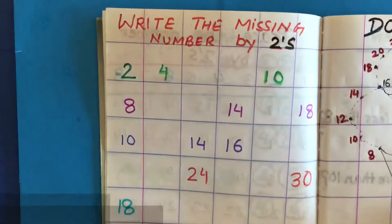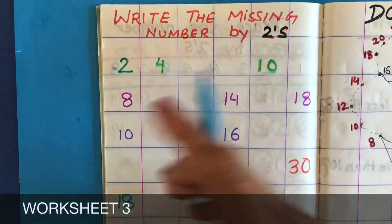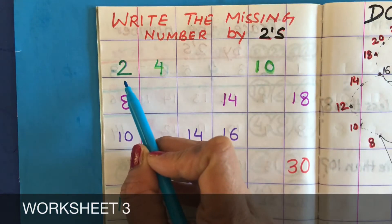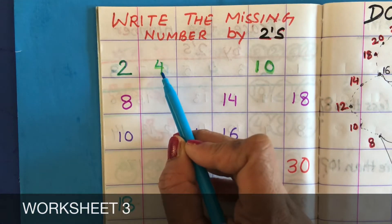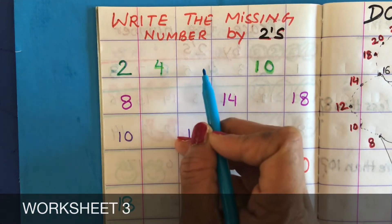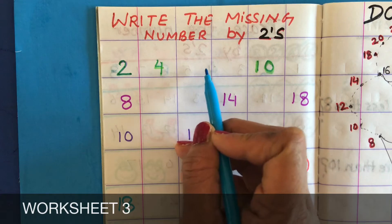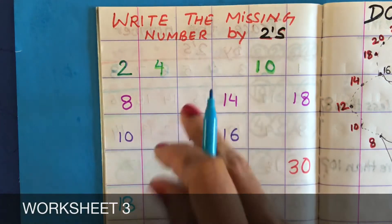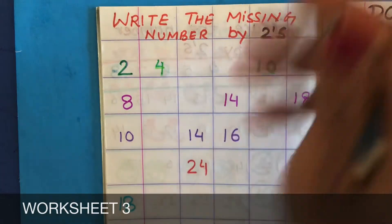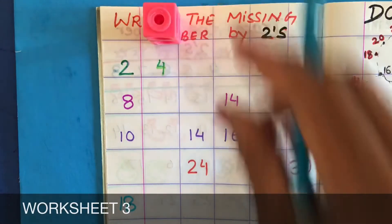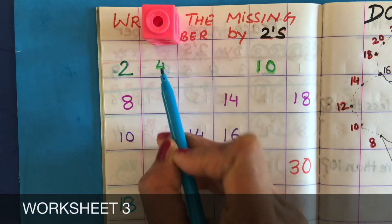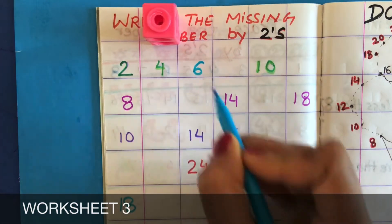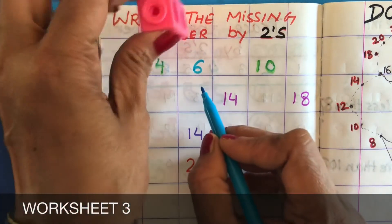The third worksheet has them write the missing number by twos. It shows two, four — so what comes next? They have to add two to four. You tell them: put here now add two, so four, five, six.